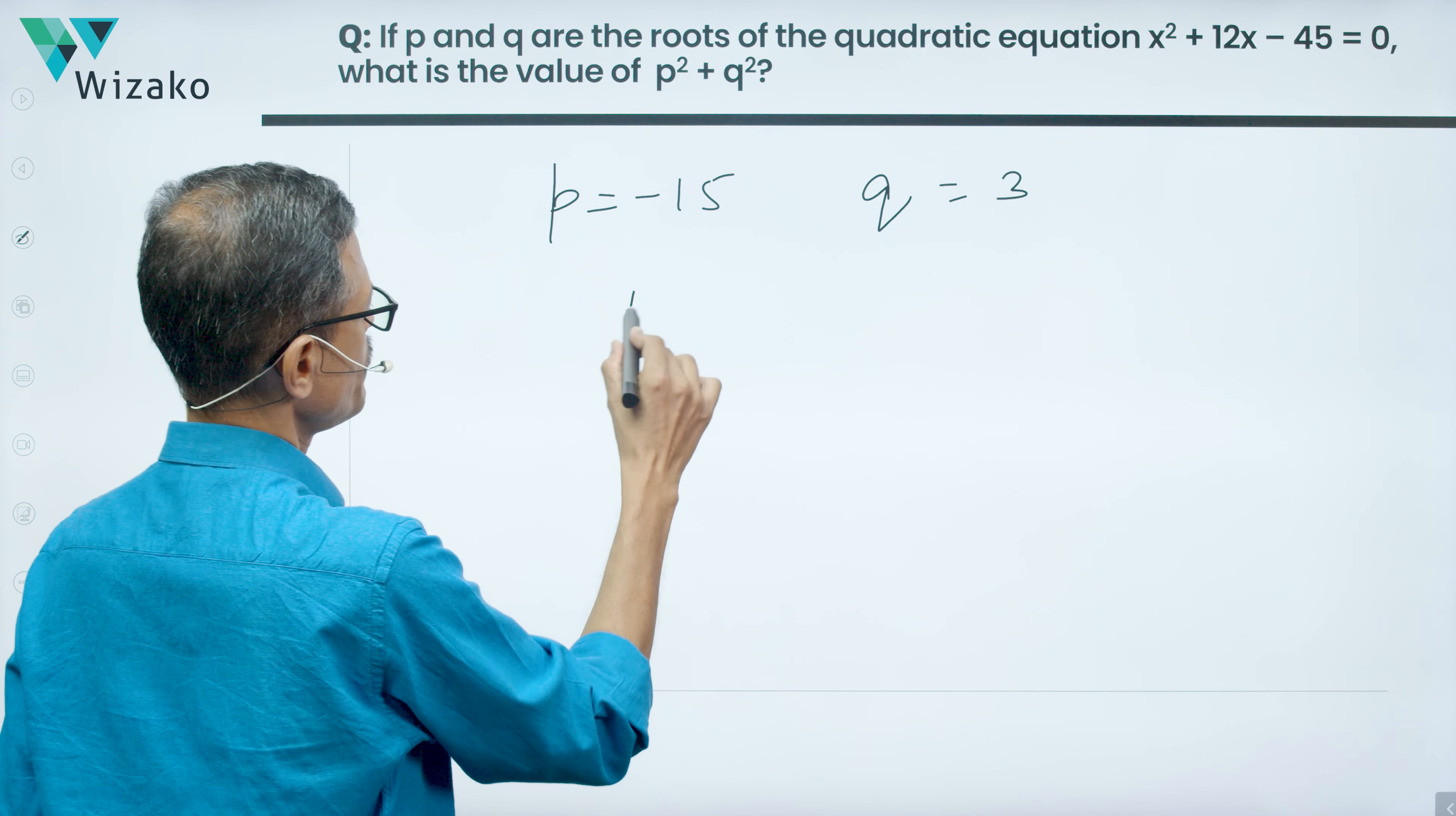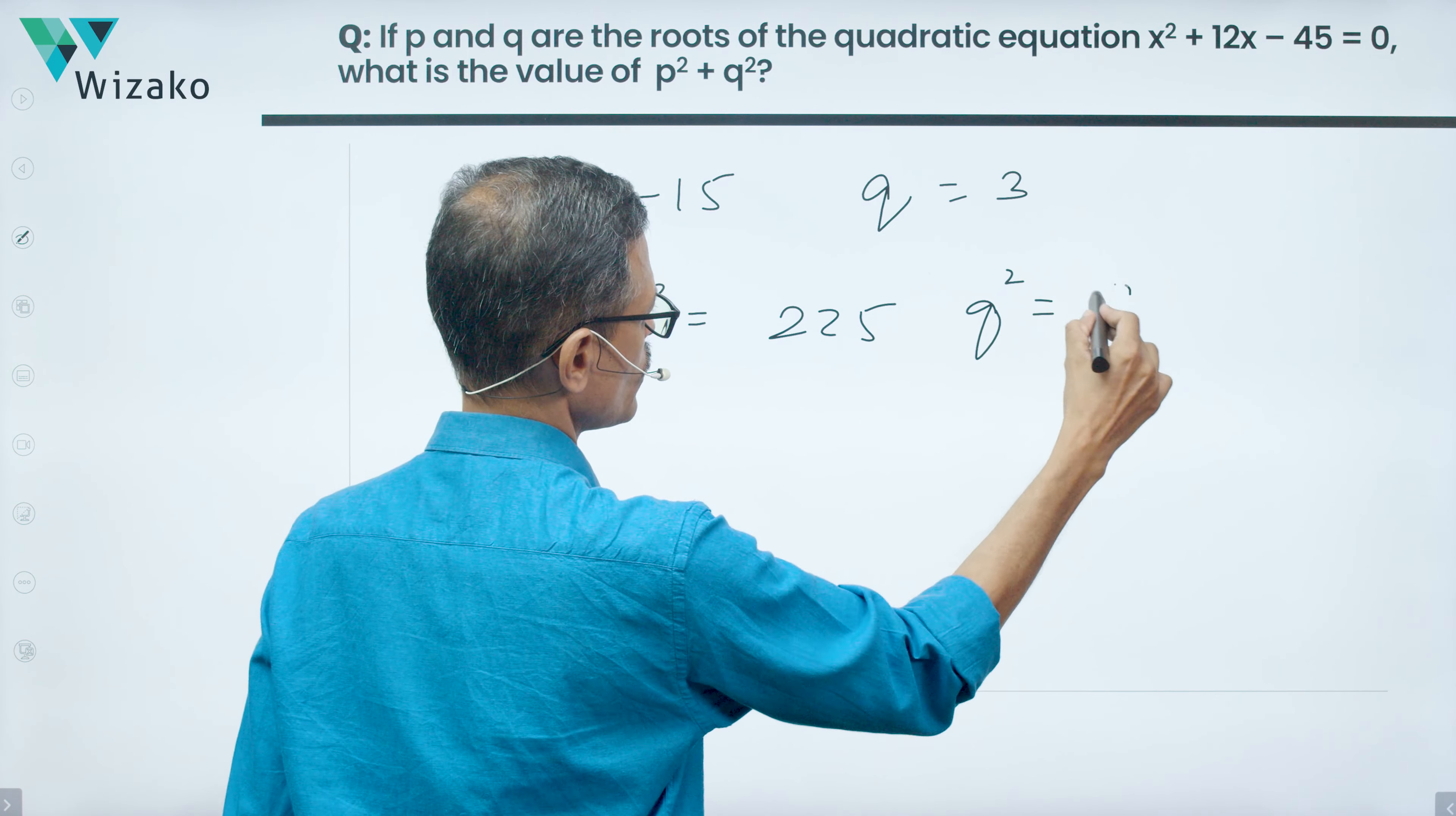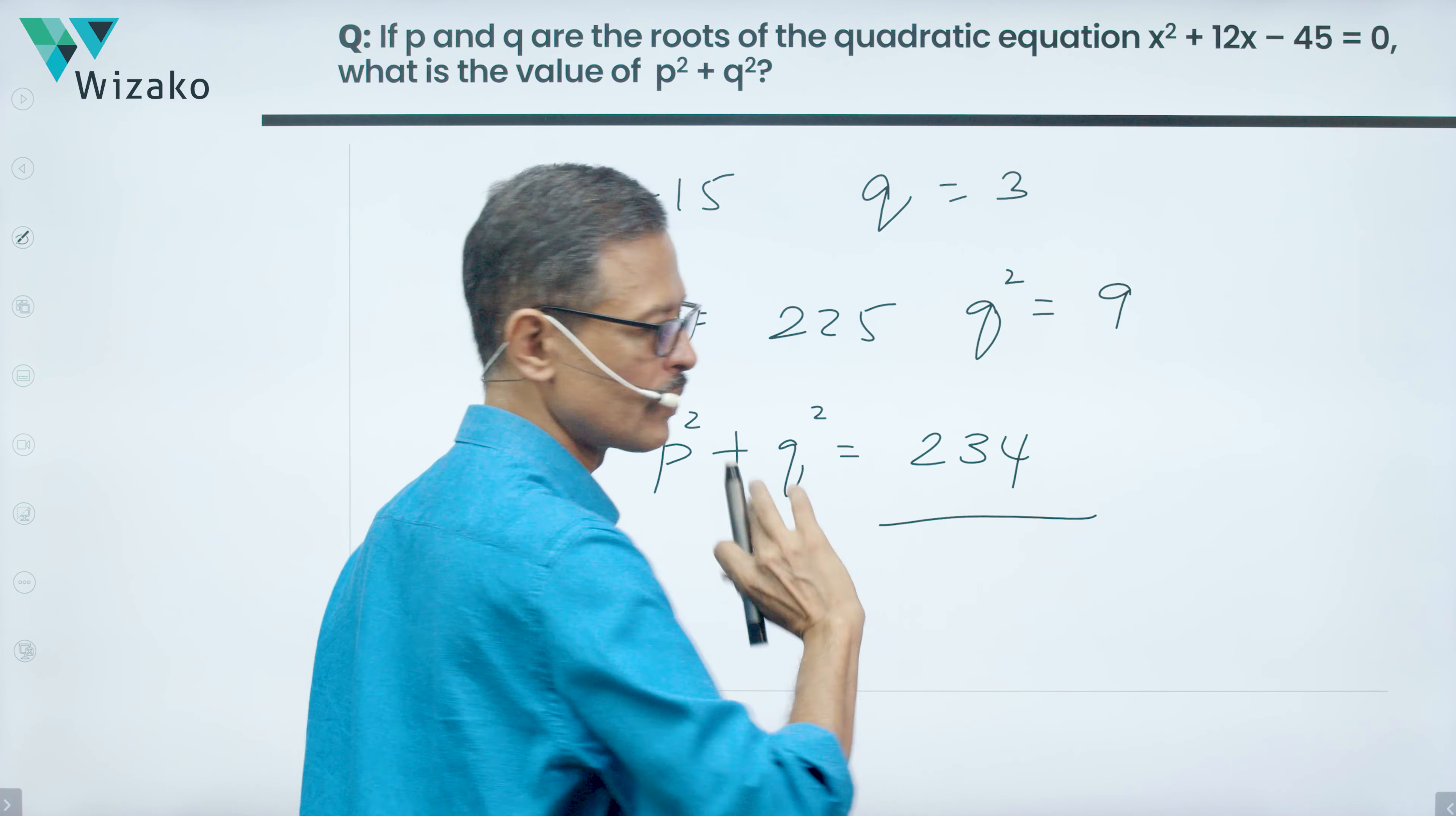q is equal to 3. So p² is equal to (-15)² which is equal to 225. q² is equal to 9. So p² + q² is equal to 234. Found the answer.